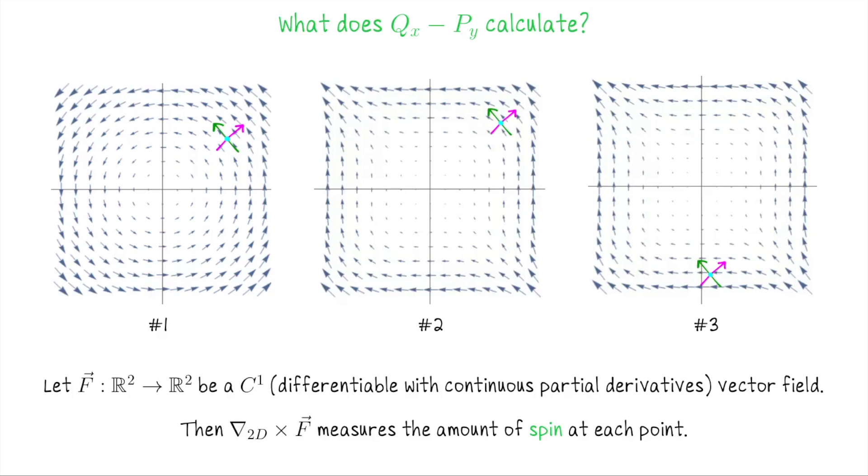It's easiest to look at vector fields in R2 compared to R3, so to understand what the curl is doing, let's focus on the scalar curl. So what does dQ/dx minus dP/dy calculate for a vector field in R2? What it calculates is the tendency of a fluid to spin locally. To illustrate that concept of spin, let's look at these three pictures.